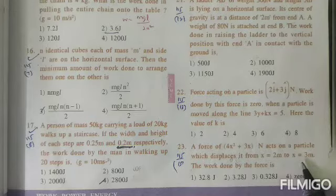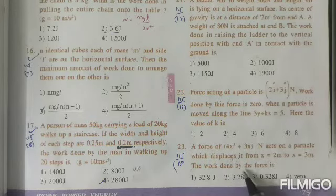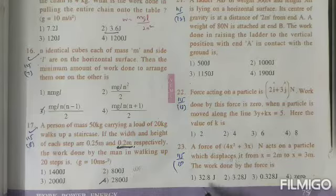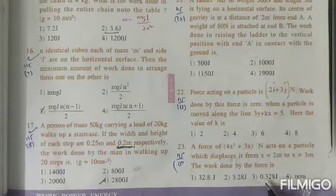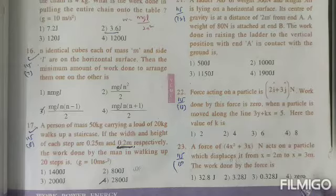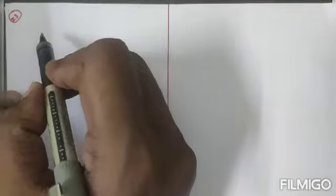x = 3 meters. The work done by the force is asking for. Options are given: 32.8 joules, 3.28 joules, 0.328 joules, then 0. So let's see the solution. I'll read the question: a force